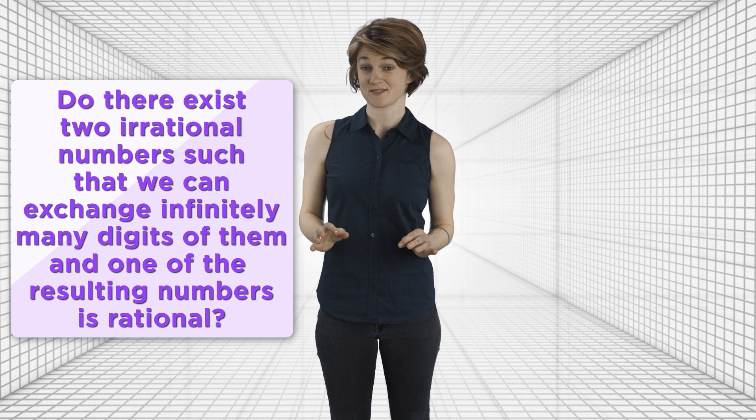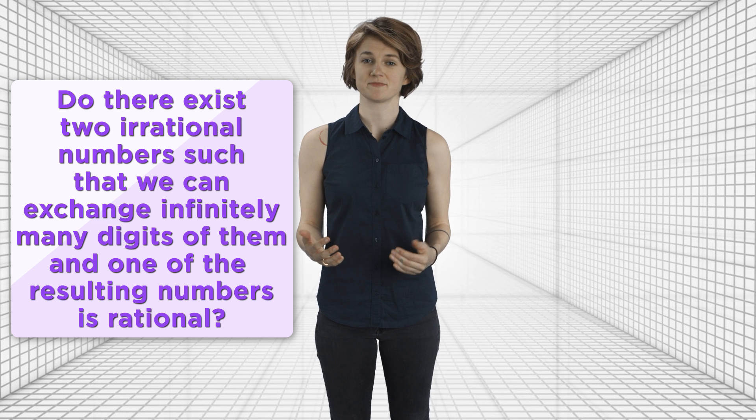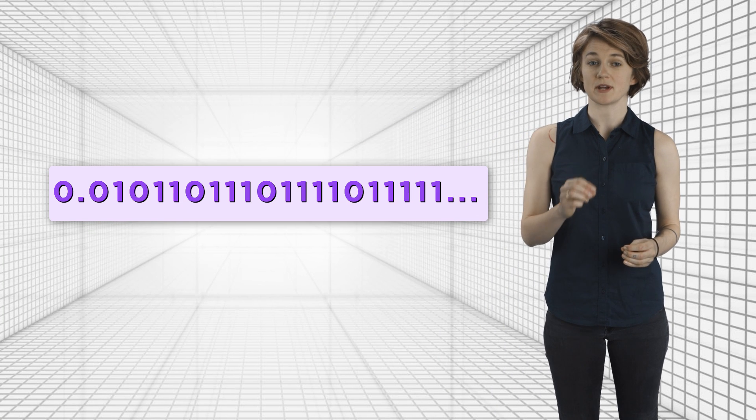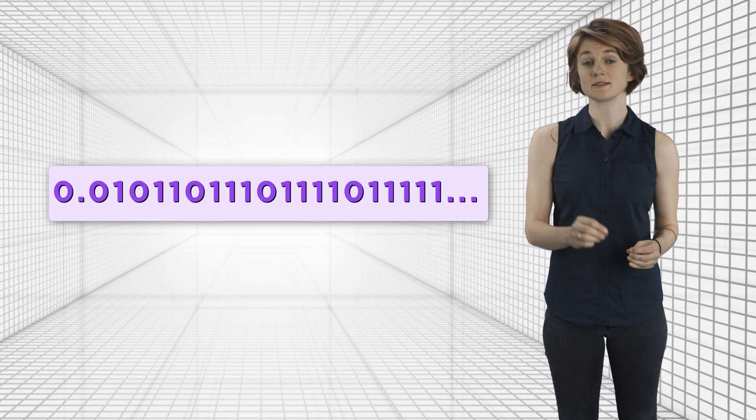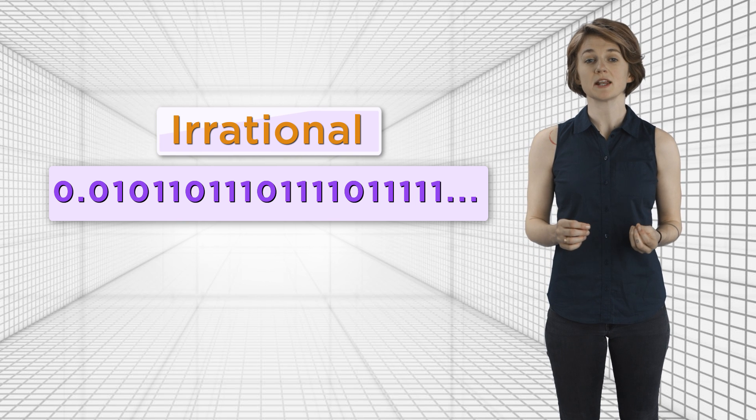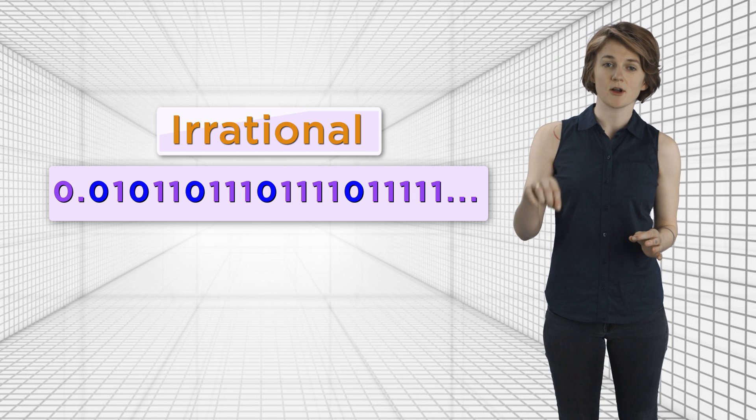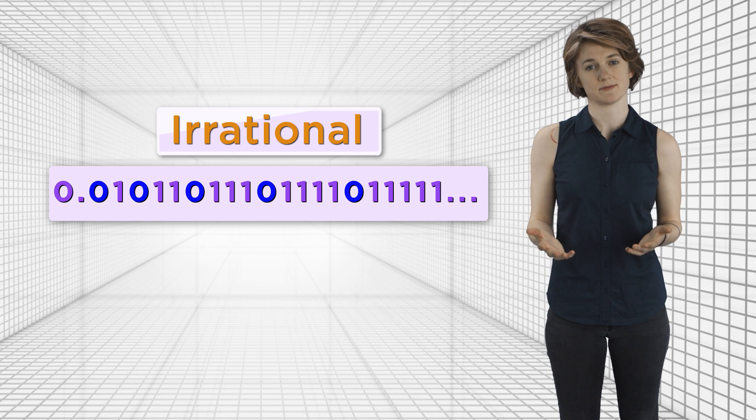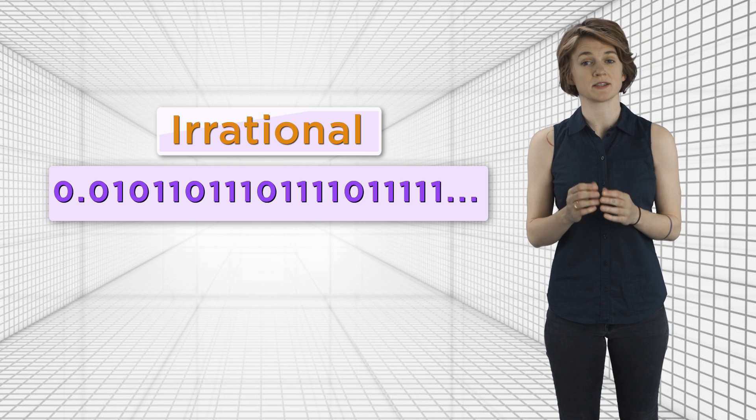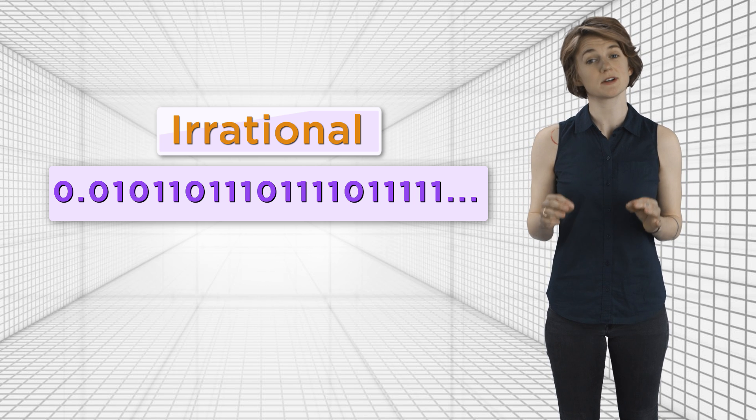The answer is yes. Maybe you came up with a different example, but here's mine. The number 0.010110111... is irrational. It's made up of strings of ones of increasing length with a zero between each string of ones. Since the string of ones becomes longer and longer, it never repeats. Therefore, it's irrational.